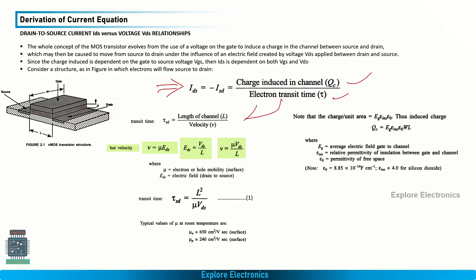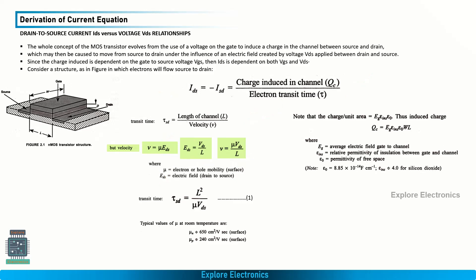The electron transit time tau_SD equals the channel length divided by velocity. The velocity can be written as mu × E_DS, where mu is the electron mobility and E_DS is the electric field between drain and source. Since E_DS equals VDS / L, the velocity becomes mu × VDS / L. Substituting this, the transit time tau_SD equals L² / (mu × VDS). For reference, the standard electron mobility is 650 cm² / (V·s) and hole mobility in a P-transistor is 240 cm² / (V·s).